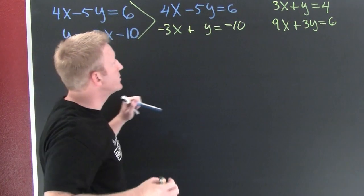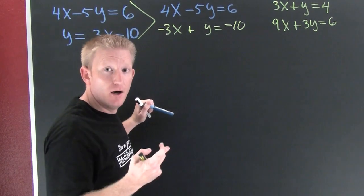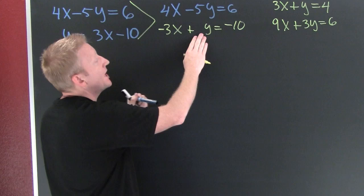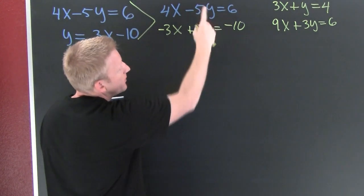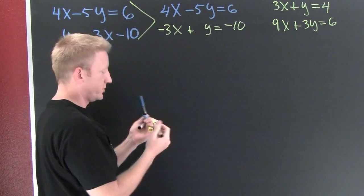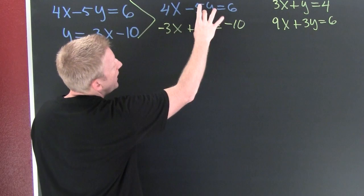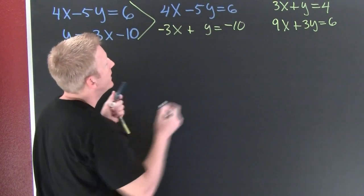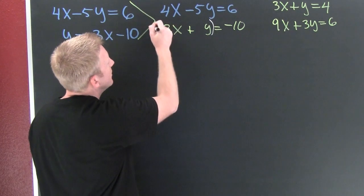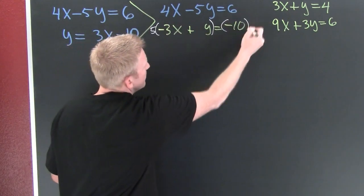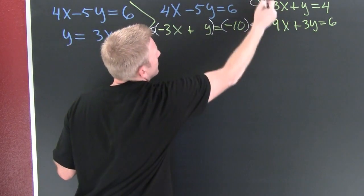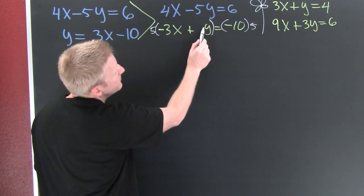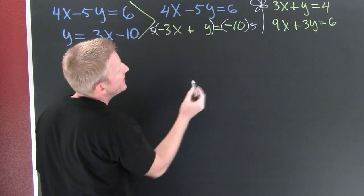Now I need to pick a variable to eliminate. It appears y is going to be the one that I want, because then I don't have to multiply both equations by a multiple. I want to try to get y to be additive inverses, so I'm going to multiply the bottom one by 5. Whatever you do to one side, you must also do to the other. We're trying to get y to be 5y so we have additive inverses.